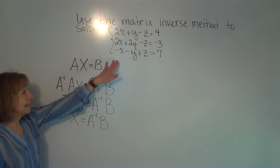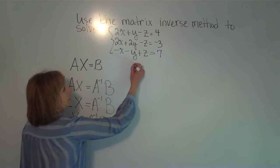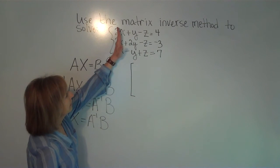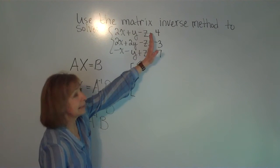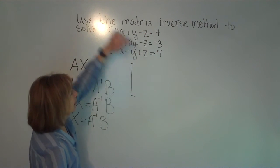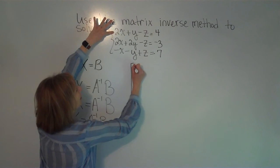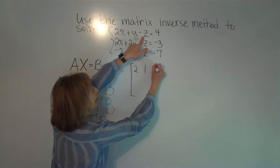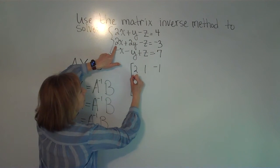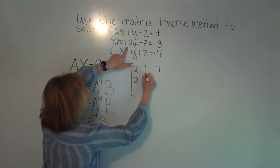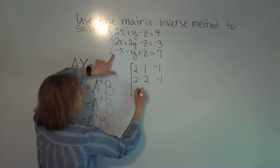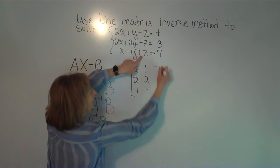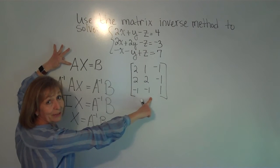Let's apply this to our specific problem. We can identify the coefficient matrix once we see the variables lined up: the x's, y's, z's, the equals signs, and the numbers. The coefficients in front of the letters are: first row — 2, 1, negative 1; second row — 2, 2, negative 1; third row — negative 1, negative 1, 1. That corresponds to matrix A.